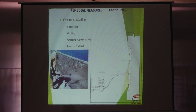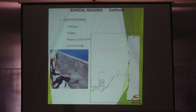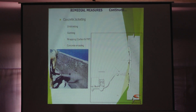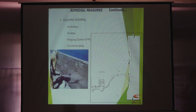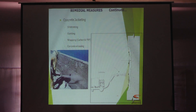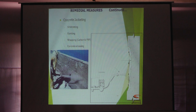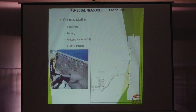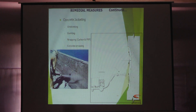Then concrete jacketing. This is another method of repair. In this method, if the steel is rusted, we should remove the loose concrete cover and the loose material, then clean the steel reinforcement. If needed, add some additional reinforcement, and then the jacketing process and connecting process is done.